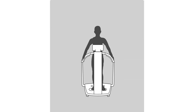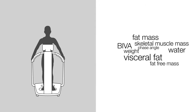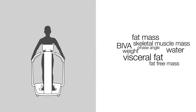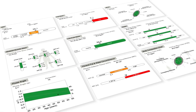A Bioimpedance Analysis, or BIA, can determine your body composition — the elements your body is made out of. This includes muscle mass, fat mass, and other parameters. This type of analysis is also used in medicine to support diagnoses and therapies, as it provides valuable insights that go far beyond weight alone.